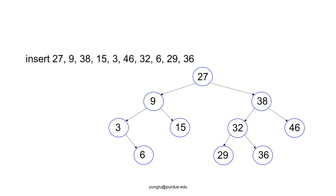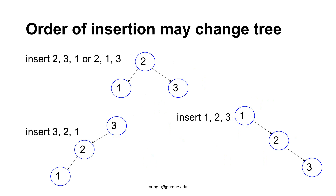The last number is 36. It goes to the right side of 27, the left side of 38, and the right side of 32. The shape of a binary search tree depends on the order of the inserted numbers. If the inserted numbers are 2, 3, 1: the root is 2, 3 is on the right side, and 1 is on the left side. If the order is 2, 1, 3, the tree is the same. If the inserted numbers are 3, 2, 1, then 3 is the root, 2 is the left child of 3, and 1 is the left child of 2.